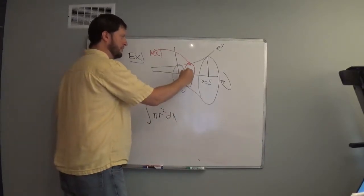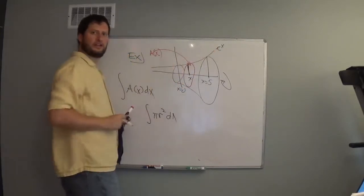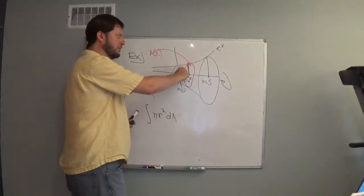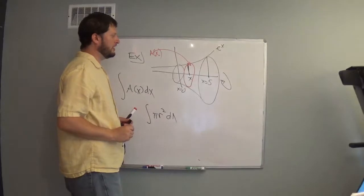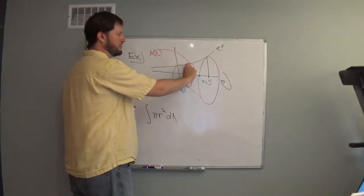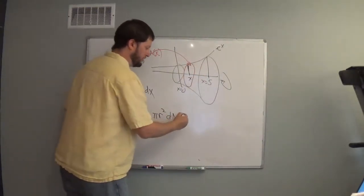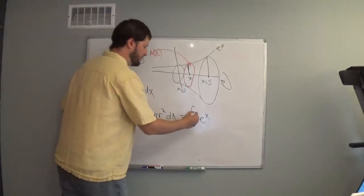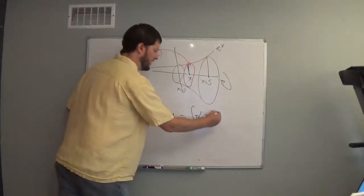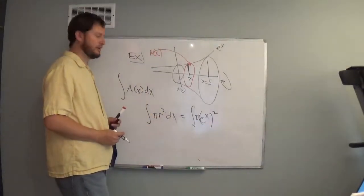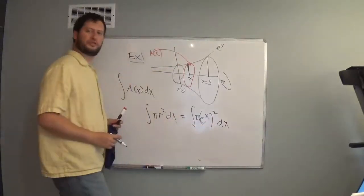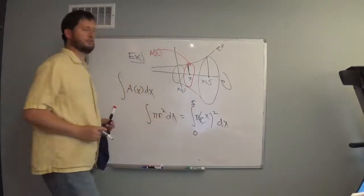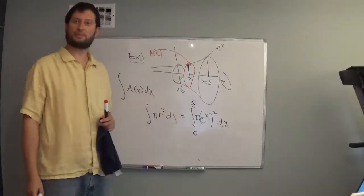The radius of this value is exactly the function. At some generic value of x, the radius of this red circle is e to the x, because e to the x is the height of the function, which gets rotated all the way around. So this is pi times e to the x squared — that's pi r squared — with dx. And then I integrate from x equals 0 to x equals 5. We've set up our integral.